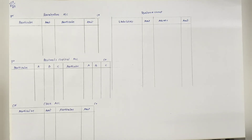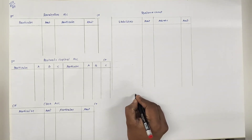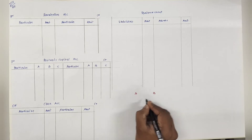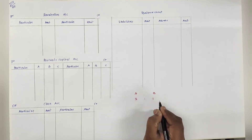पहले हम देखते हैं क्या दिया है. A and B are partners sharing profit and loss in ratio 2:1. यहाँ पर two partners हैं A and B. और इनका ratio है 2:1.